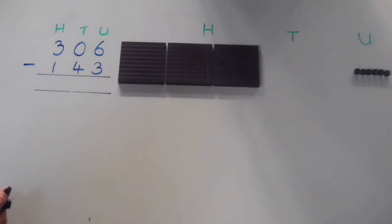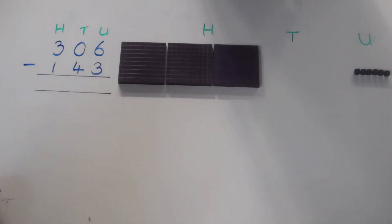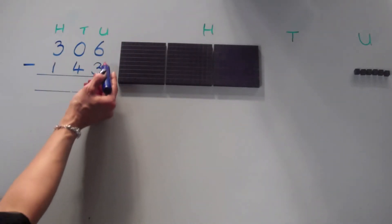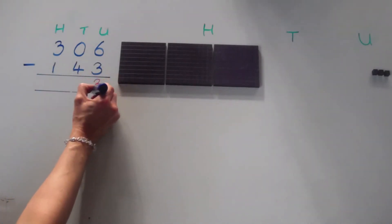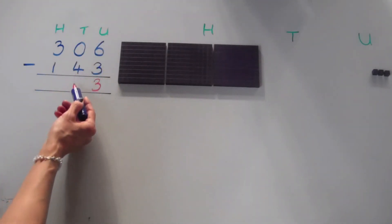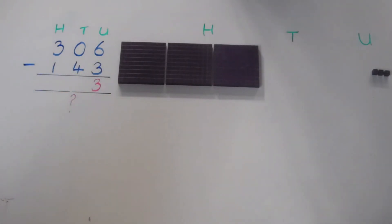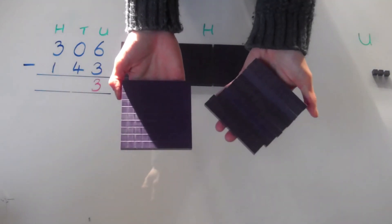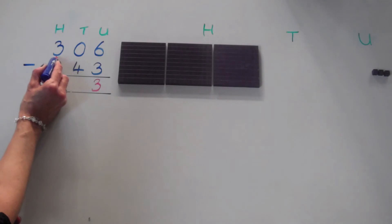Our next calculation is three hundred and six take away one hundred and forty-three. As before, we start with the units column. Six take away three leaves us with three. Let's look at the tens column. We've got zero tens and we have to take away four tens. How can we take away four from zero? This is where we need to remember that we can exchange a hundred for ten tens.